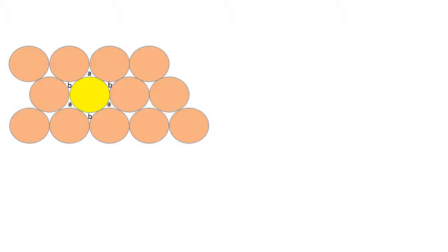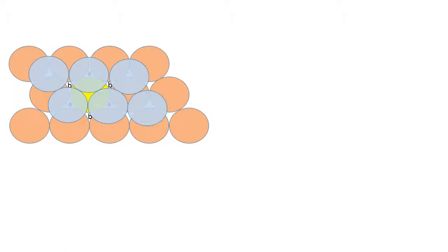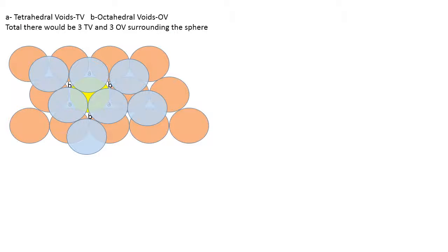If I see carefully there are 6 voids of which 3 are A voids and 3 are B voids. If I cover the A void with a blue colored sphere — covering the triangular void having the apex upwards — we see that subsequently all the triangular voids having the apex upwards are filled up. And the A void which was a triangular void having the apex upwards has now been converted to a tetrahedral void. And the B void which has the triangular apex downwards has now been converted to an octahedral void.